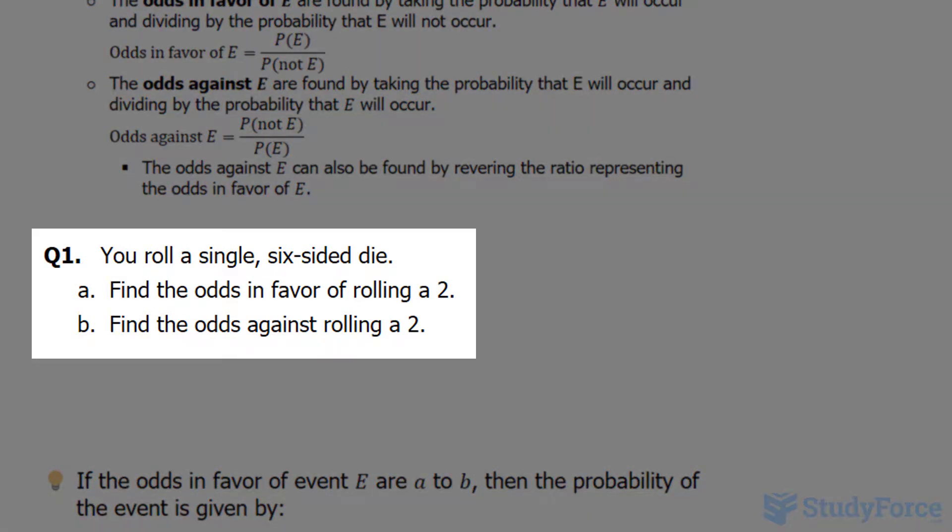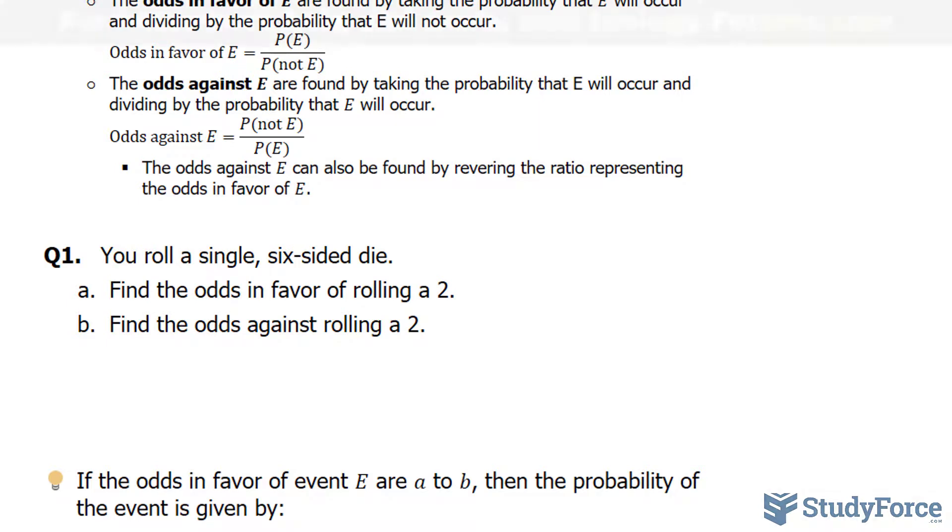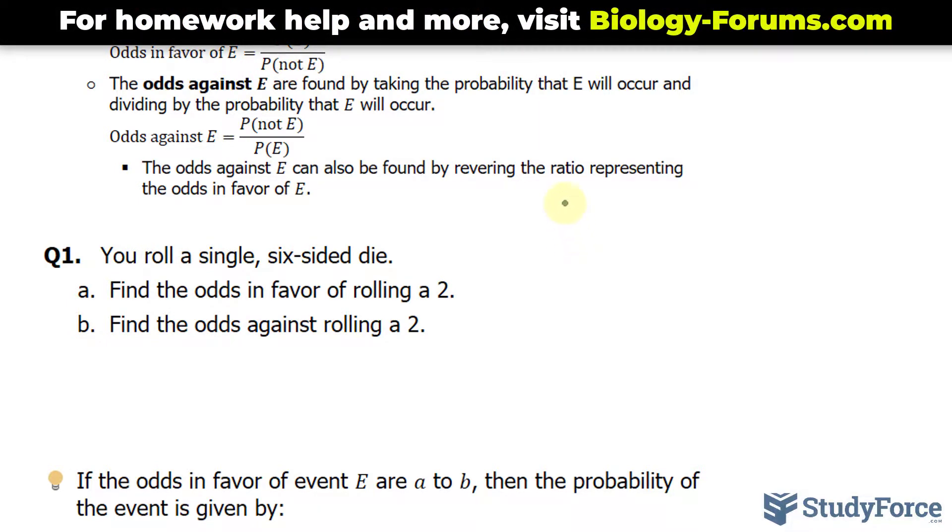If you roll a single six-sided die, find the odds in favor of rolling a 2. So let's find the odds of rolling a 2. Since it's a six-sided die, that's 1 in 6.